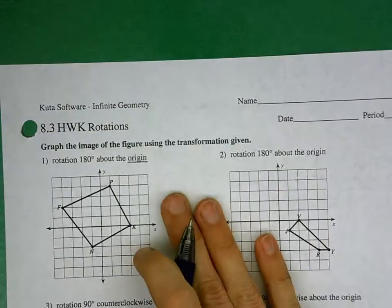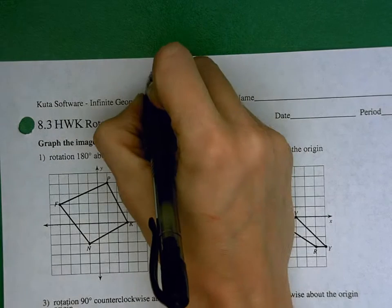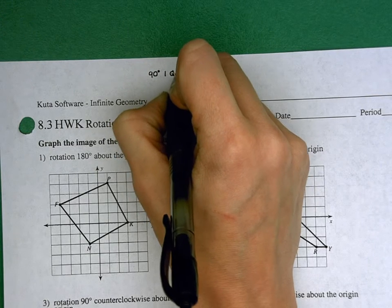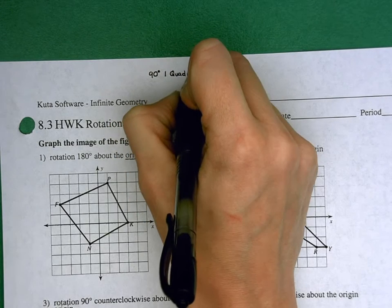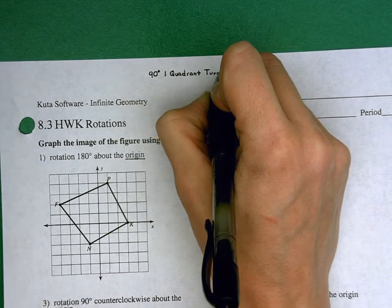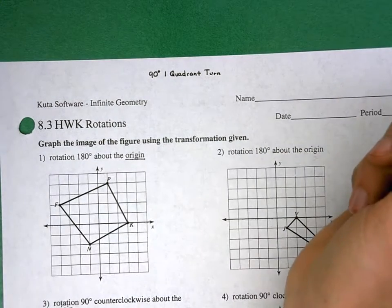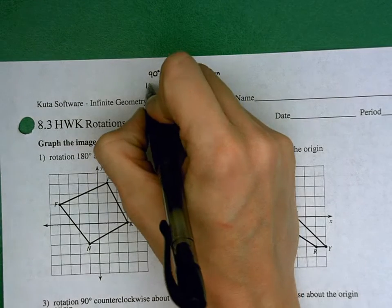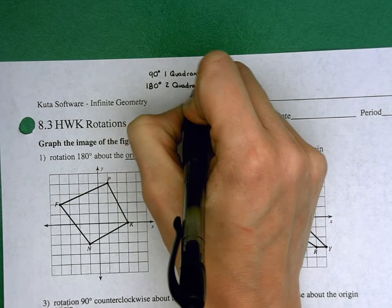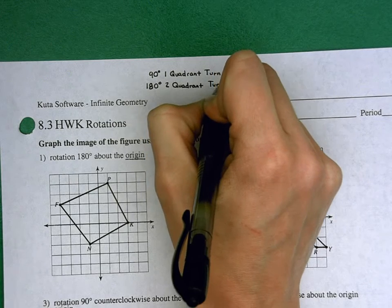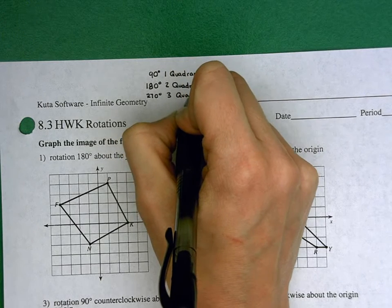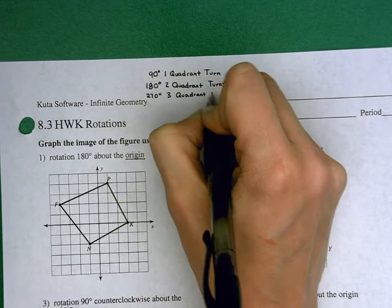Okay, so I'm going to go ahead and make a little key for myself up here just to make sure that I remember these. A 90 degree rotation is one quadrant turn. Every point is going to end up one quadrant over from where it started. Which direction depends on what they tell you. Sometimes they'll say clockwise, sometimes they'll say counterclockwise. 180 degrees is two quadrant turns, which means every point is going to be two quadrants from where it started. And 270 degrees is three quadrant turns, which means every point is going to end up three quadrants from where it started.